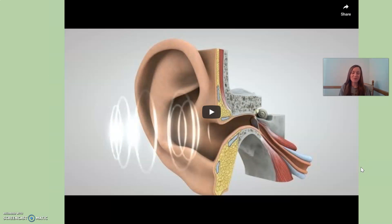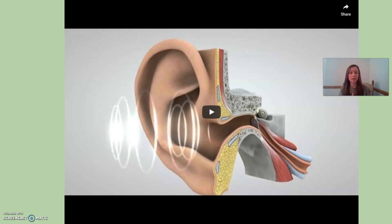There is one more video that is really helpful for seeing what happens once the bones carry vibrations into the inner ear and cochlea. This video also covers one theory of sound — the place theory — which will be explained more after the video. Watch how they portray the vibrations moving into the cochlea, and how they show the cilia and hair cells.